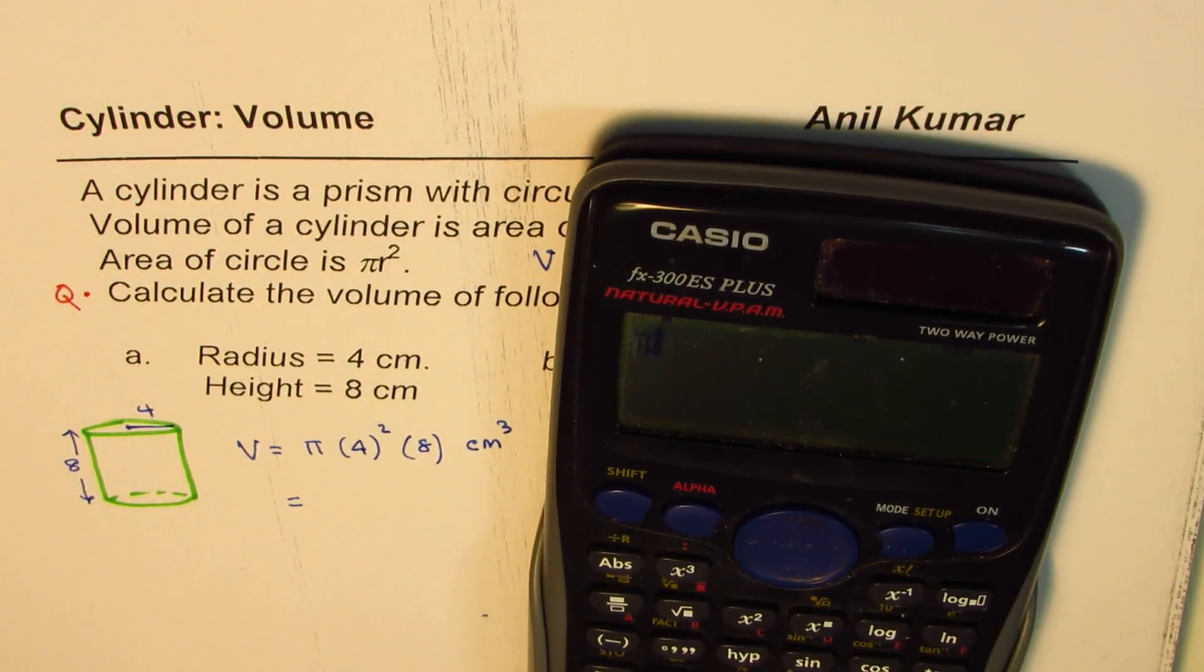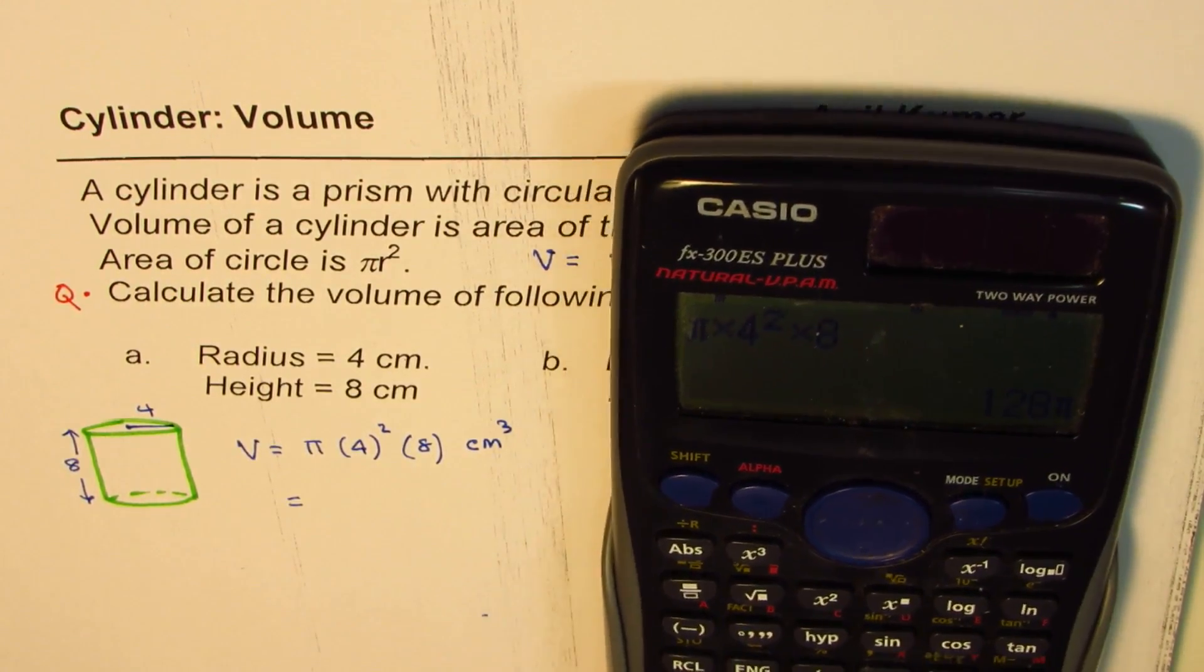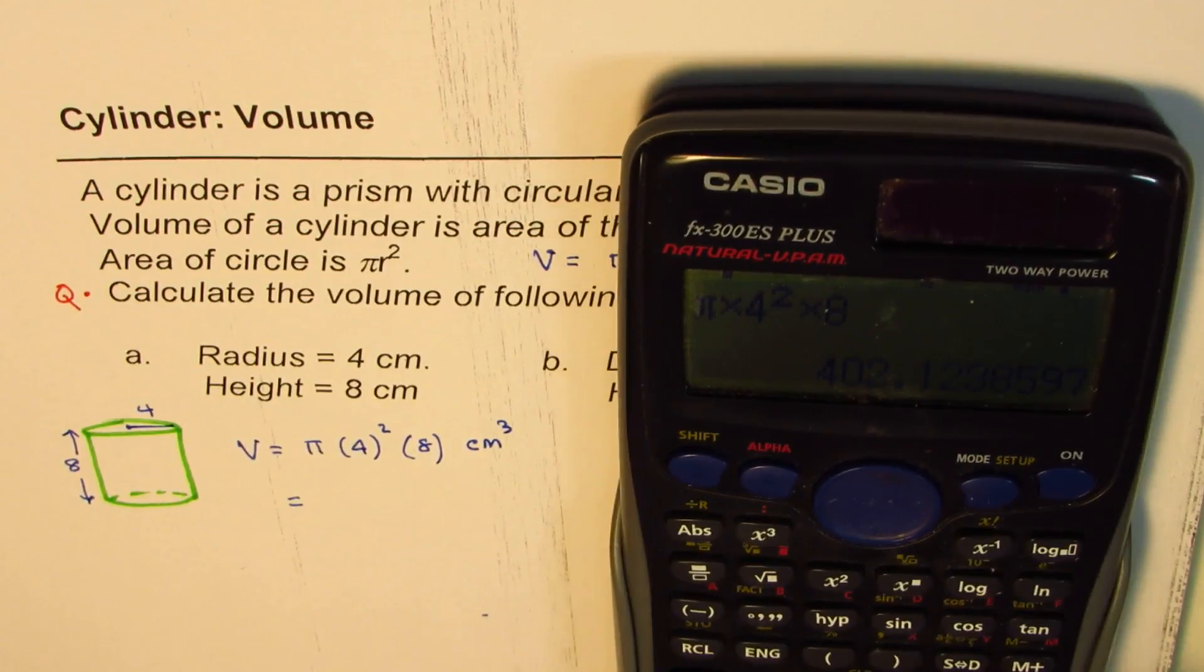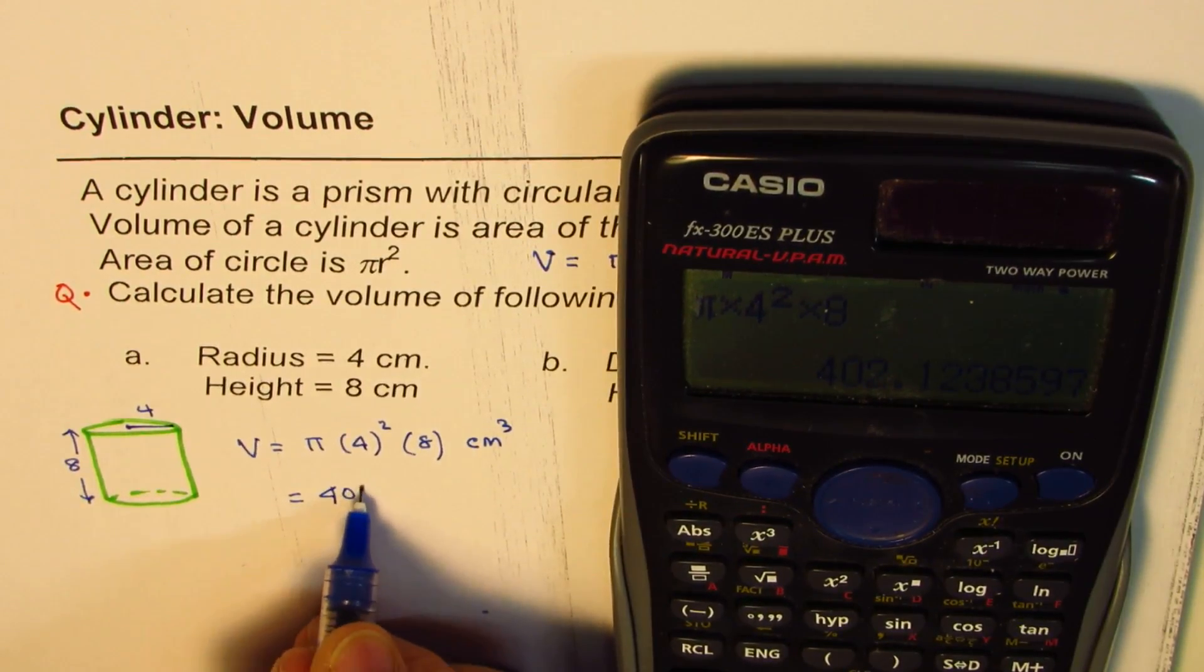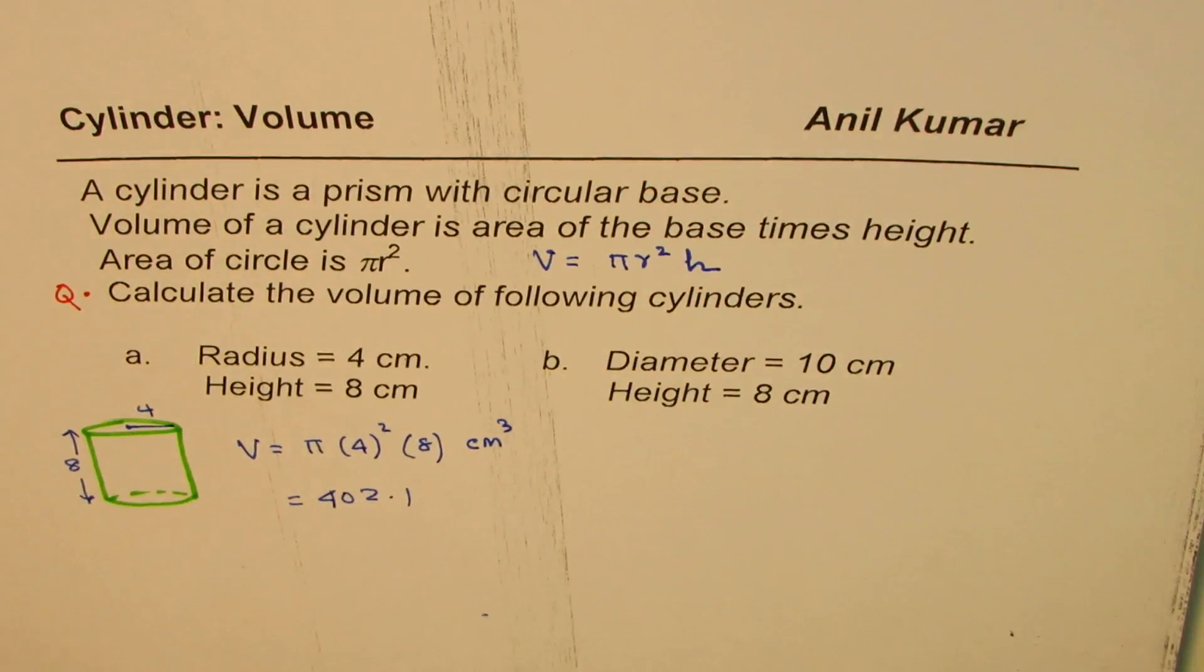So this is pi times 4 square times 8. That gives us 128 pi or in decimals, 402.1. So let's round this answer to one decimal.